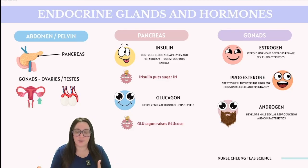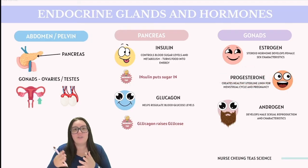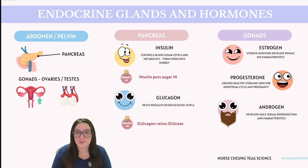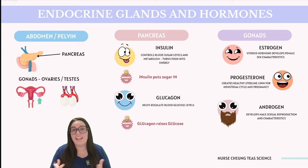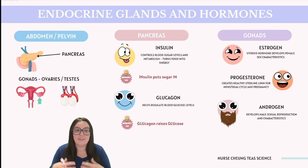Lastly, we're going to discuss our gonads — our ovaries and testes. The ovaries produce estrogen, which primarily promotes the growth of the uterine lining and the development of female secondary sex characteristics. Additionally, the ovaries produce progesterone, which supports and maintains that uterine lining growth and plays a pivotal role in fetal development during pregnancy. Testes produce androgens, also known as testosterone, which is essential for sperm production and the development of male secondary sex characteristics. While estrogen, progesterone, and testosterone are present in all individuals, their hormone concentrations and primary functions vary — estrogen and progesterone are found in higher levels in females, while androgens like testosterone are more concentrated and predominantly function in males.